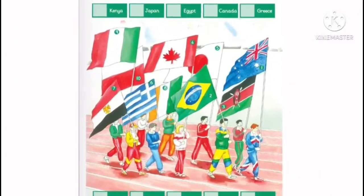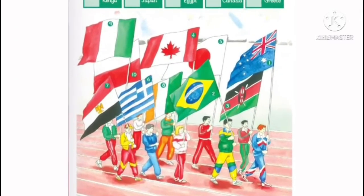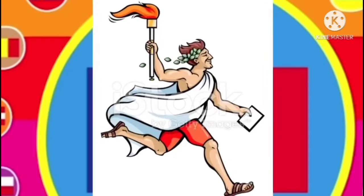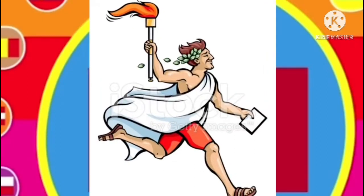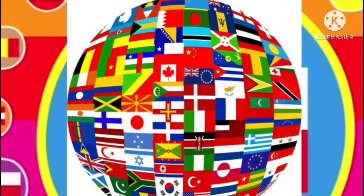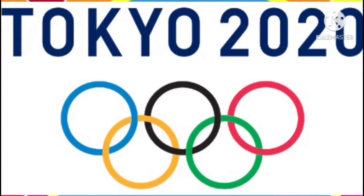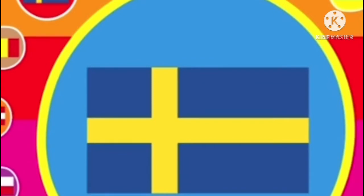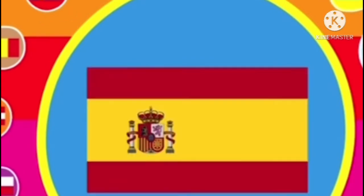Look at page number 22 of your classbook. What's happening? It's the Olympics. The Olympics are sports meetings where sportsmen and ladies from different countries of the world meet to compete with each other. Before doing this task, you can go back to the previous lessons and revise different countries' names and their flags.